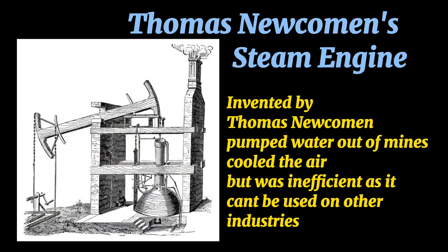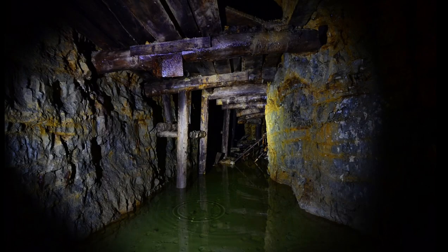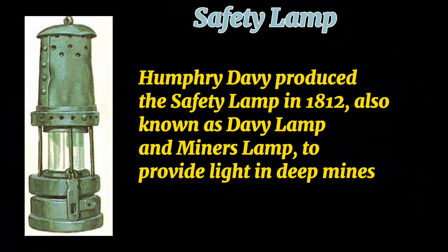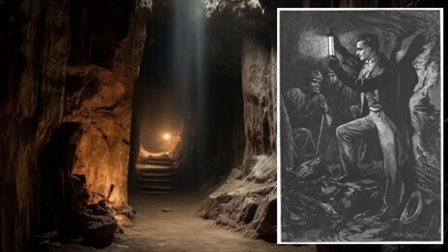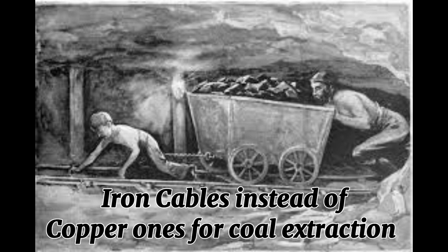Venturing into the depths of the coal industry of Britain, we see problems like accumulation of water, poisonous gases, and the need for light. Thomas Newcomen's steam engine in 1712 and the more efficient steam engine of James Watt provided efficient solutions for water accumulation in mines. Humphrey Davy's 1812 safety lamp addressed the need for light, and the innovation of iron cables for coal extraction further accelerated the coal industry.